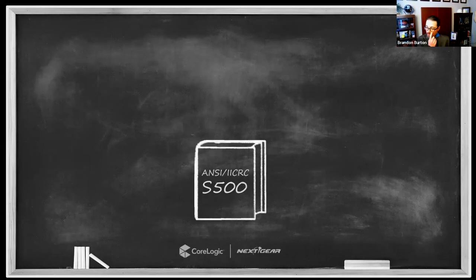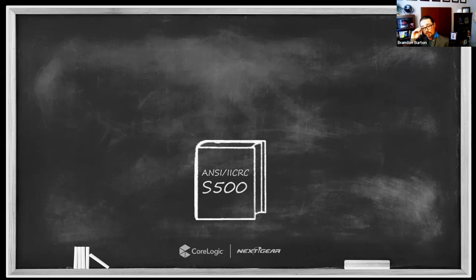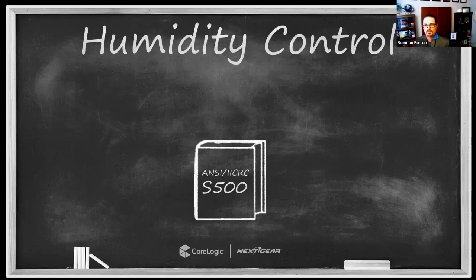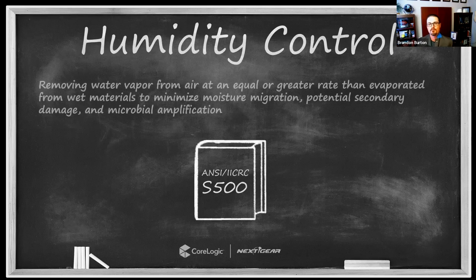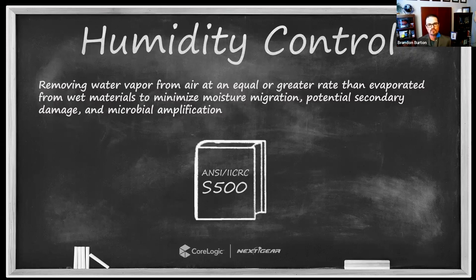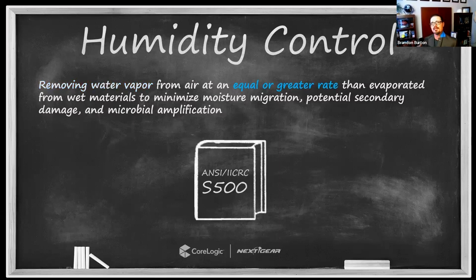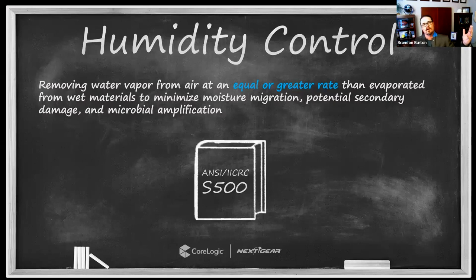In terms of terminology, I want to start right from the IICRC's most current S-500 document and look closely at the definition for humidity control found in the definitions section. The humidity control definition has a lot of components. First of all, humidity control begins with removing water vapor — controlling humidity means removing moisture from the air.